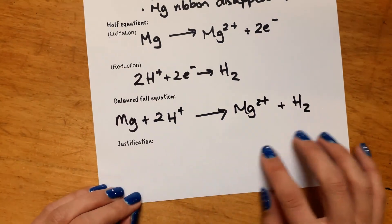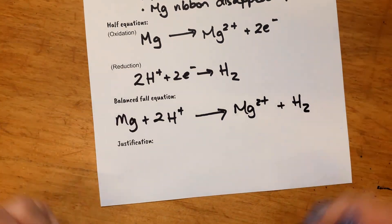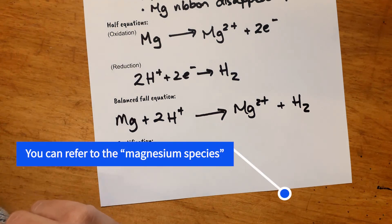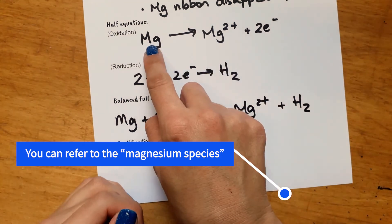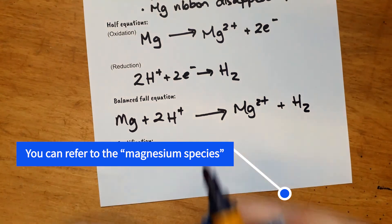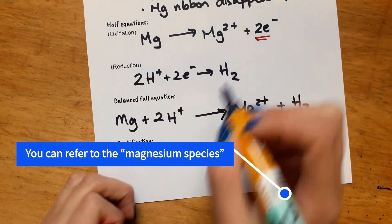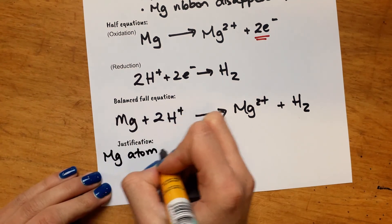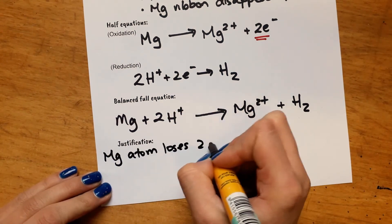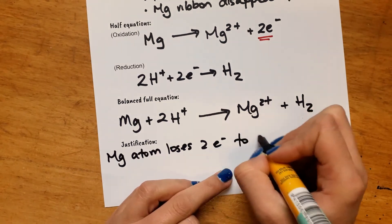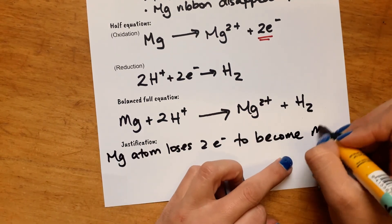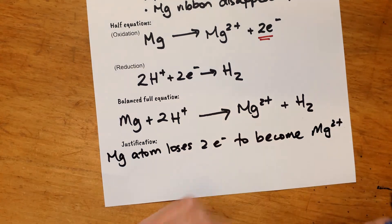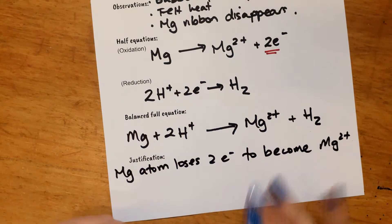So to justify how you know this is oxidation or reduction, you could say that the magnesium has lost two electrons. And those have turned up over there. So magnesium atom loses two electrons to become a magnesium ion.